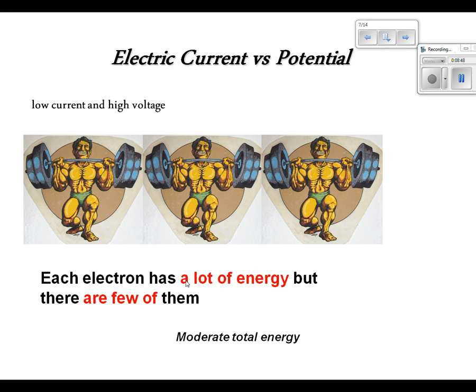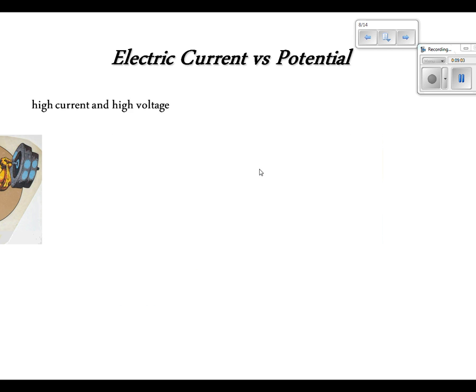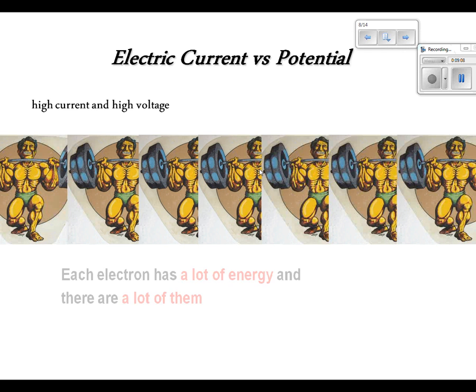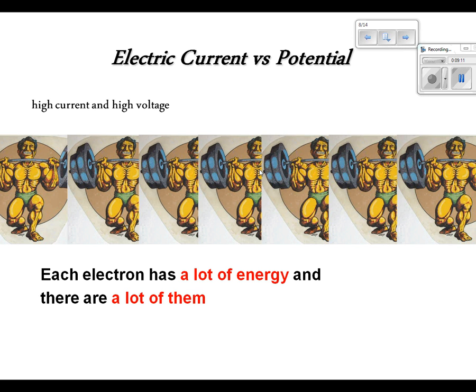You could probably fill the last one in by now. There's lots of energy and lots of them. High current, high voltage. Look at how many of these strong ones there are. Each electron has a lot of energy, and there are a lot of them. So, my total energy is going to be high total energy. Keep in mind those pictures. Potential is another word for voltage. They use them interchangeably.